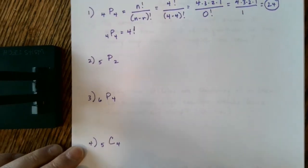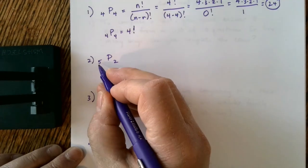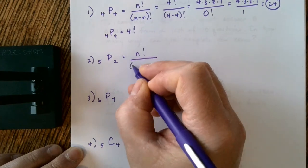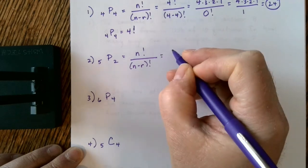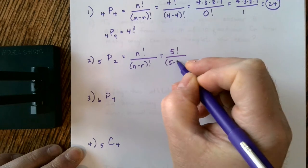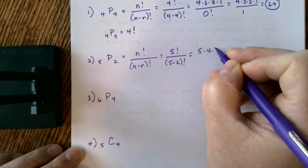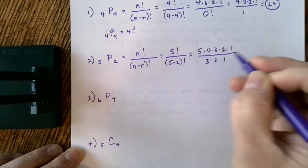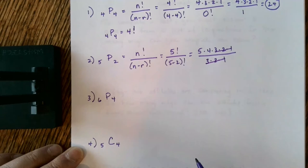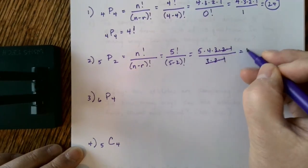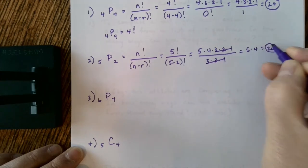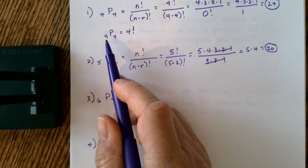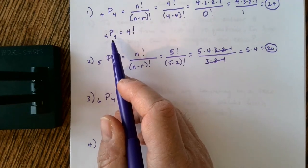Example two: 5 items taken 2 at a time. Using the formula: 5 factorial divided by (5 minus 2) factorial, which is 5 factorial divided by 3 factorial — that's 5 × 4 × 3 × 2 × 1 divided by 3 × 2 × 1. We can reduce from the threes down and we end up with 5 × 4, or 20. Now, is there a faster way? Yes — since selecting all items would just be a factorial problem, we can use a shortcut.